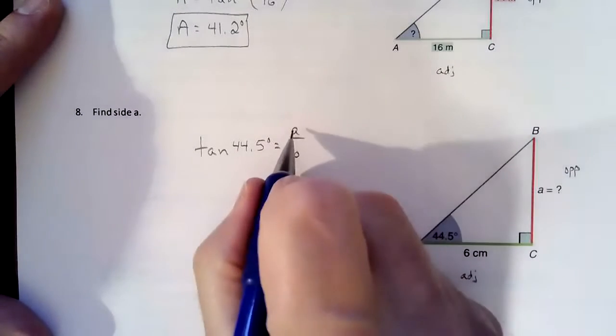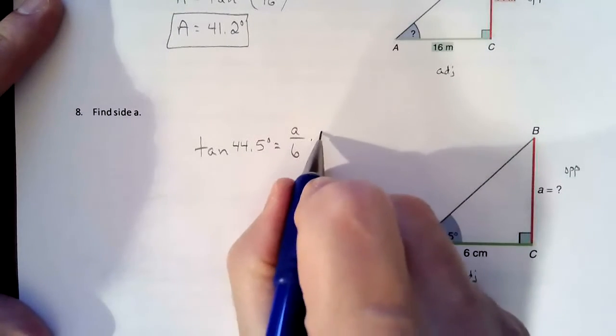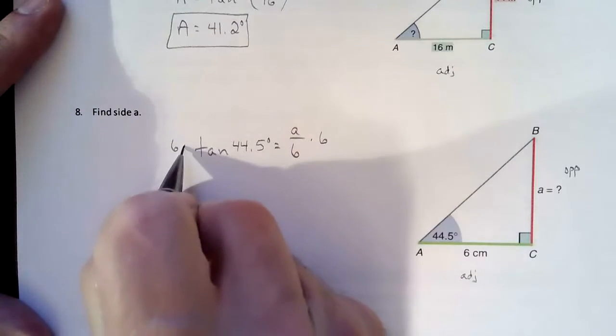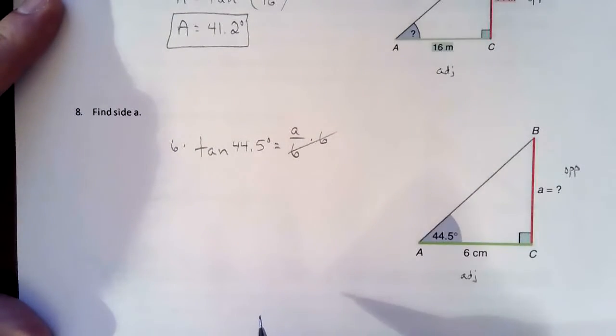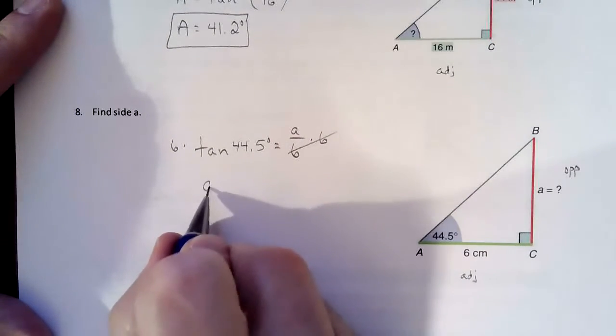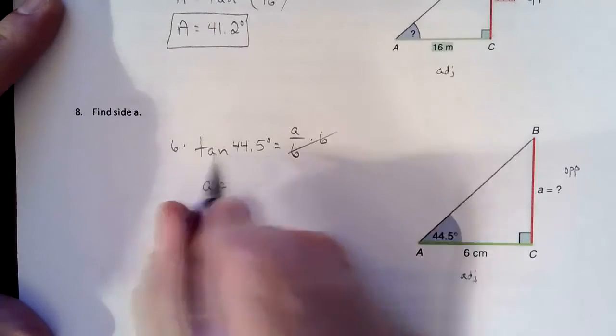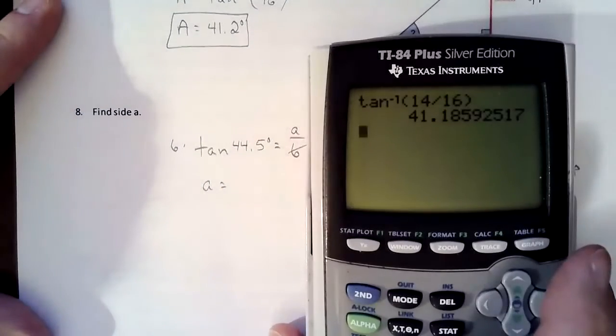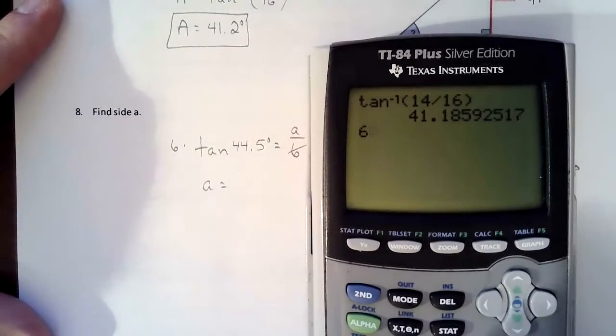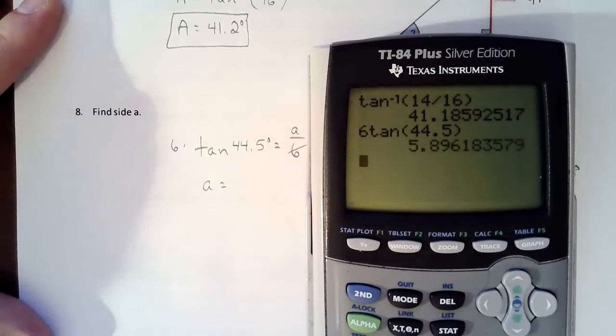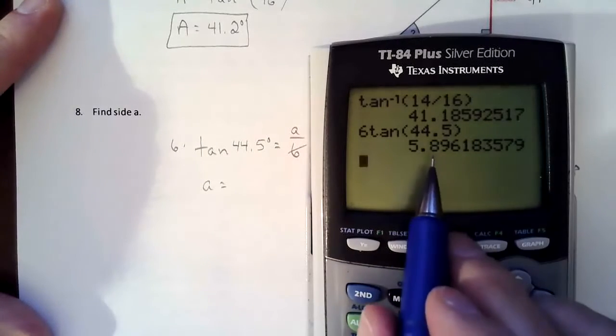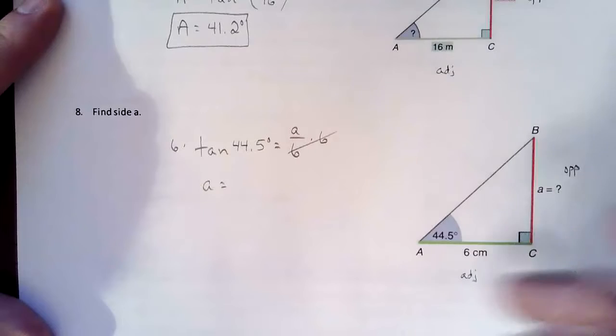And then we're going to try to solve for A. So to isolate A, that means we're going to be multiplying 6 over to the other side. So those are going to undo each other and cancel. So A is going to equal whatever 6 times tangent of 44.5 is. 6 times tangent 44.5, that gets us 5.9. So that is our length, 5.9 centimeters.